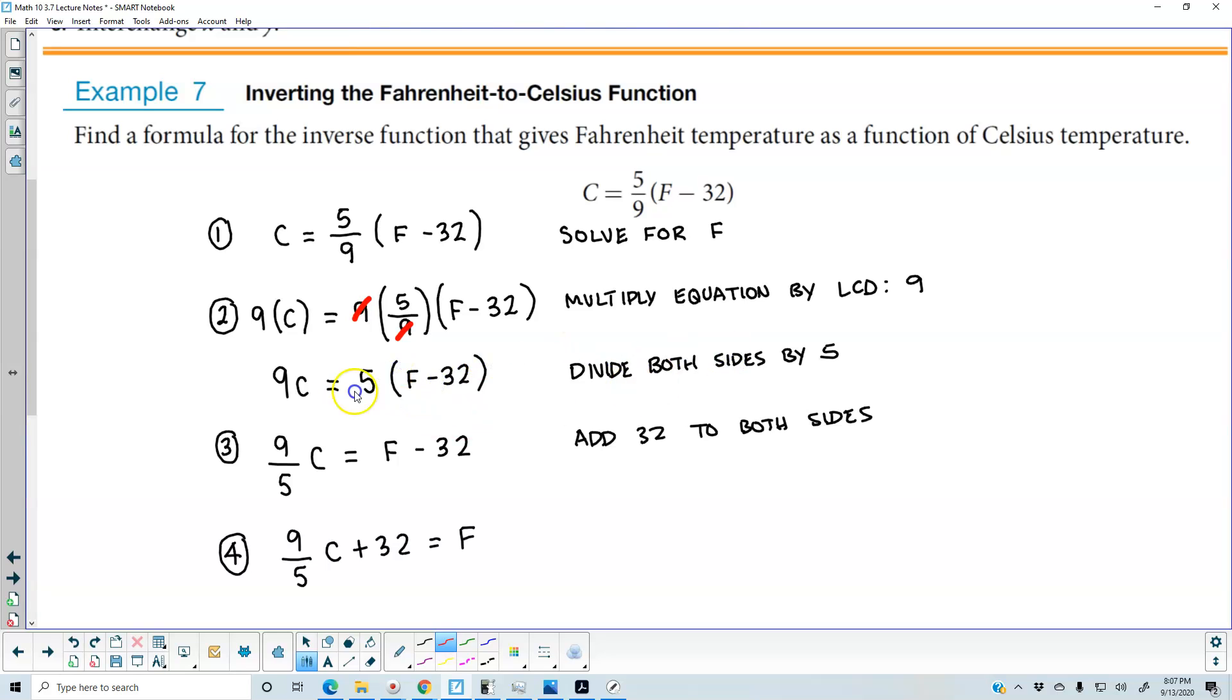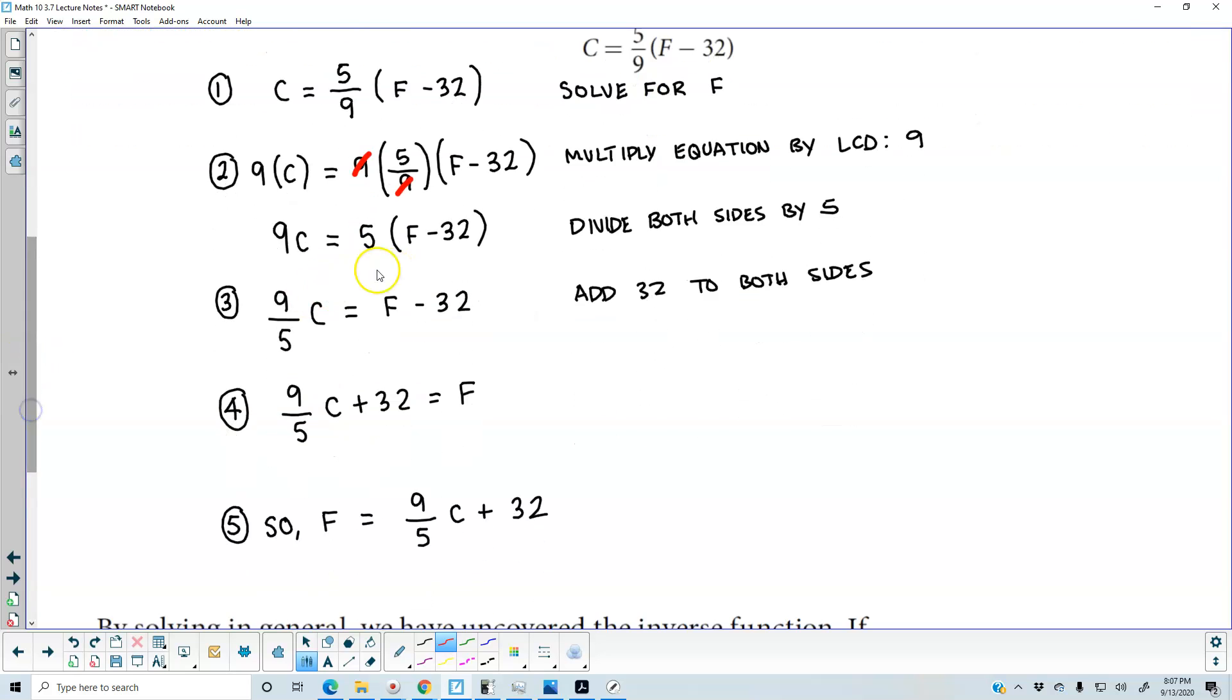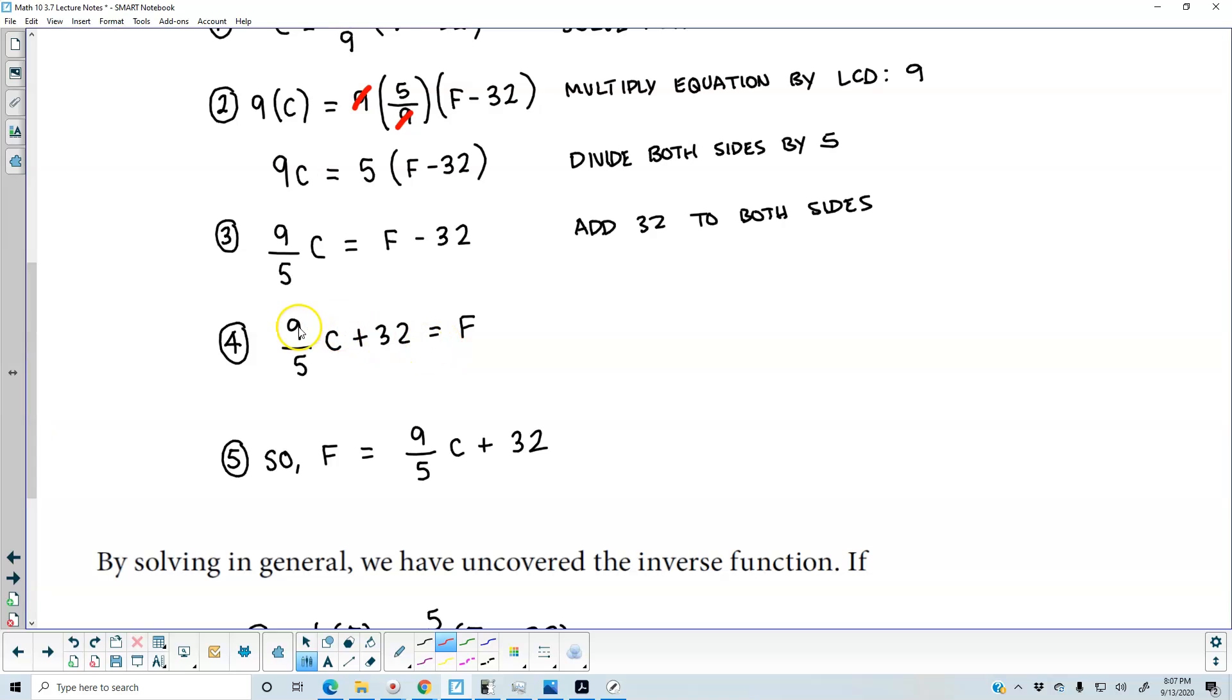Now we're going to divide both sides by 5 because our goal is to isolate and solve for F. So when we divide both sides by 5, we get 9 fifths C equals F minus 32. Now to get F by itself, we're going to add 32 to both sides. So F is going to equal 9 fifths C plus 32.